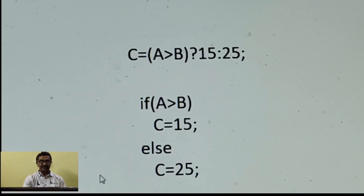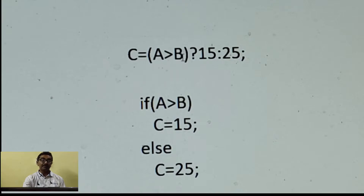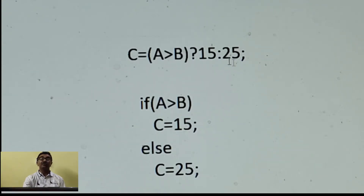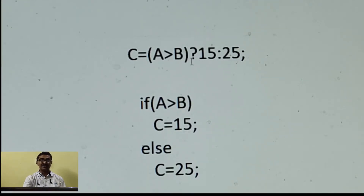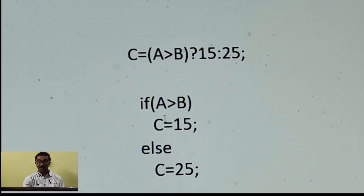Here is a real example checking which of two variables is greater. If the value of a happens to be greater than b, then 15 is assigned to variable c; otherwise, 25 is assigned to c. Note that the parentheses around the condition are not necessary — it still works fine. The corresponding if-else statement is simply a substitute for this ternary operator.